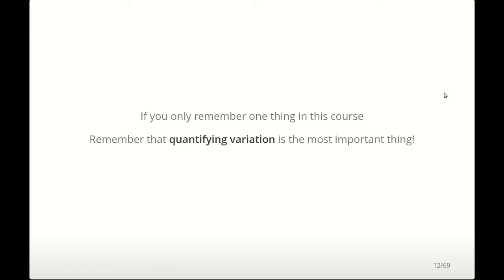The main thing I want you to get out of this course is that quantifying variation in data is really the key thing you need to be able to do. If you can remember that, we'll have done well. That's the key goal as we go through: we're trying to describe the variation we see in the data, and by doing so we can answer questions with a certain level of confidence.